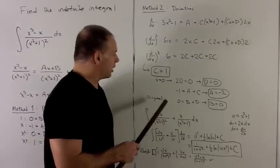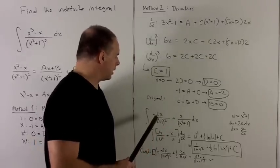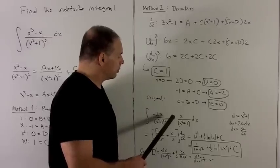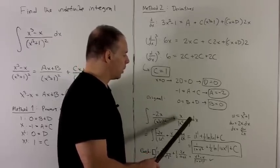Okay, we stick in our coefficients. So we're looking at minus 2x over x squared plus 1 squared plus x over x squared plus 1 dx.